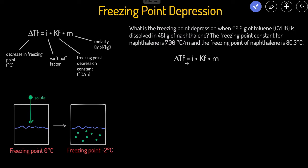Since this question is about freezing point depression, let's start with the equation and look at what variables are already given to us. We already know the freezing point depression constant. Toluene is the solute — that's what we're dissolving — and naphthalene is our solvent. Toluene's formula is C7H8. We know this is a molecular substance because it contains two nonmetals, and molecular substances do not break up into ions when dissolved. So the i value is one. We have i, we have Kf, and we need to solve for molality.